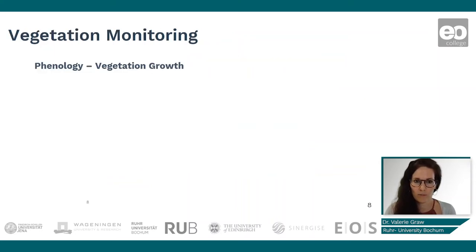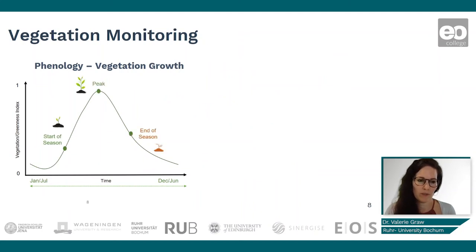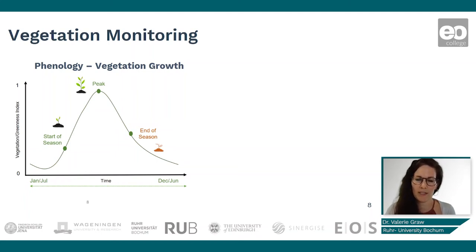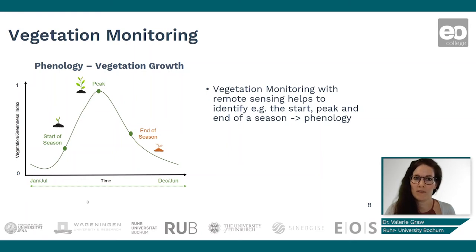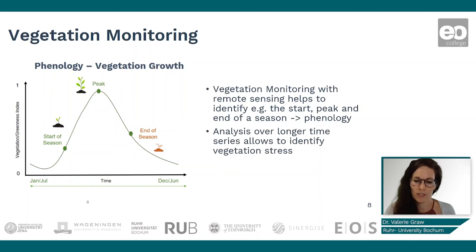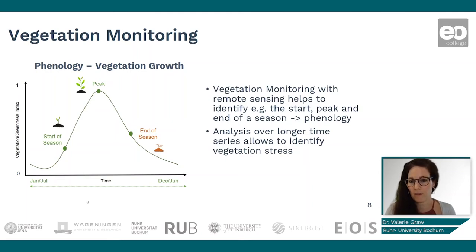Why is vegetation monitoring so useful for drought monitoring? You can easily detect the phenology of vegetation — the start, peak, and end of the season depending on how the plant is growing. By running analysis over longer time series, you can identify vegetation stress, for example if a season is starting later or if the peak is much lower than in previous years.